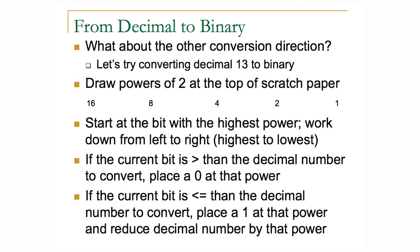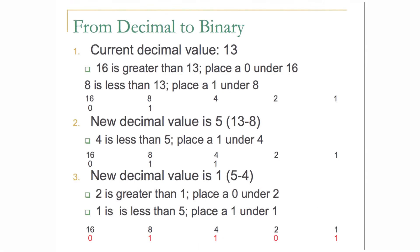However, if the current binary bit is less than or equal to the decimal number, we place a one under that binary number, and then we subtract the current decimal number from the value of that binary number. This may be more understandable if we look at this example of converting the number 13.